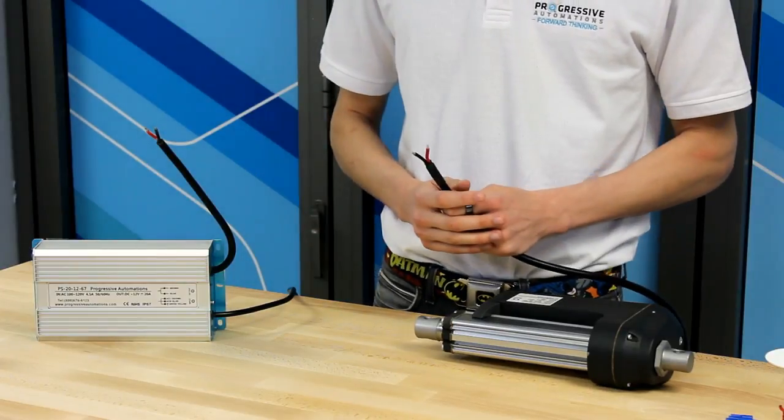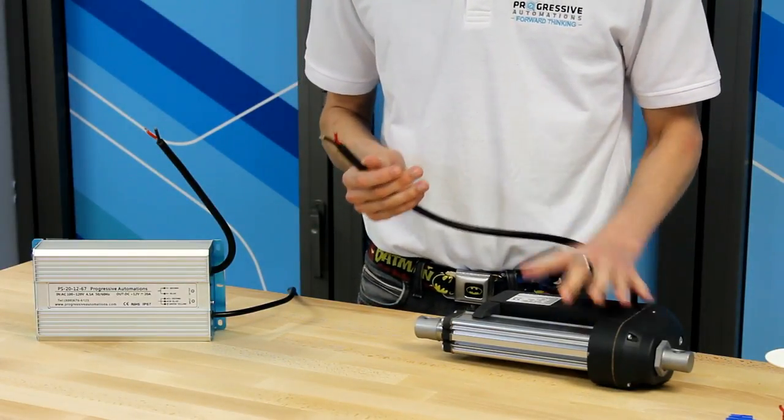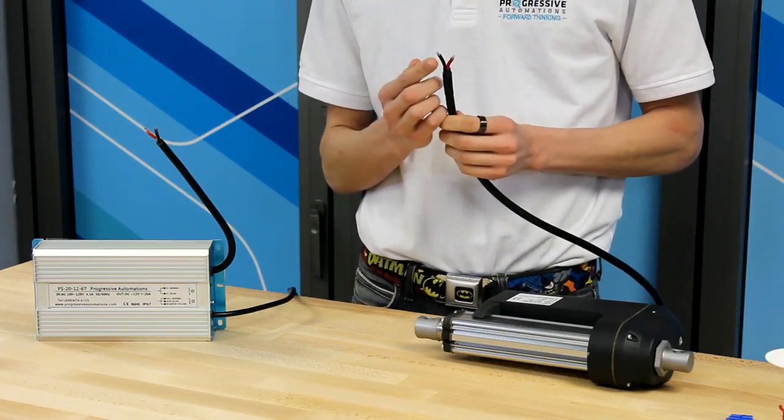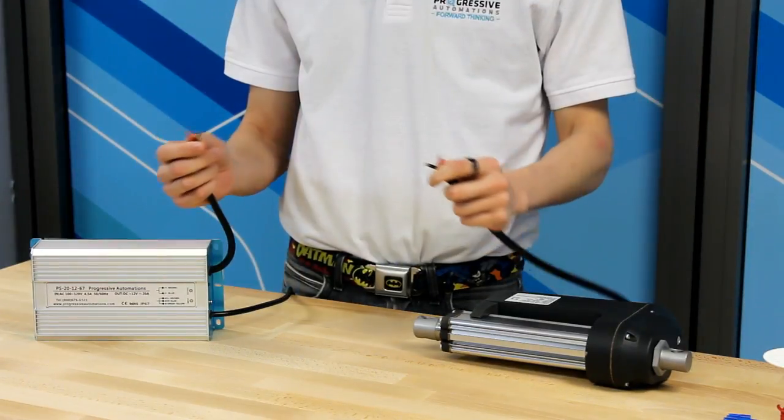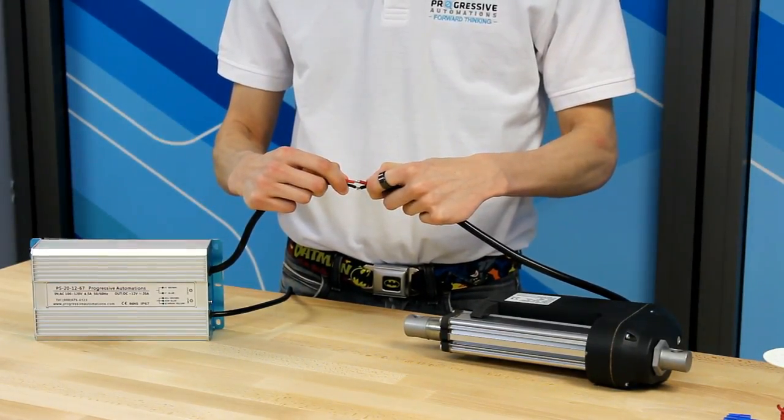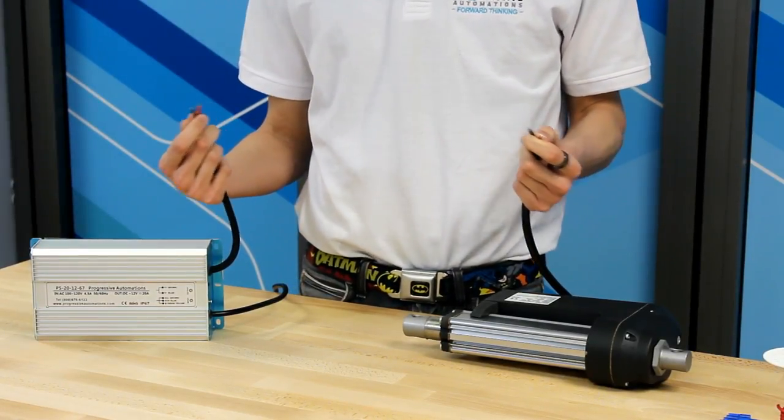Now to wire up our linear actuator. As you may already know, our actuators are powered by DC motors. This means to move forward, you need to apply positive voltage to the positive terminal and negative voltage to the negative terminal. To reverse direction, you simply switch around the voltage.